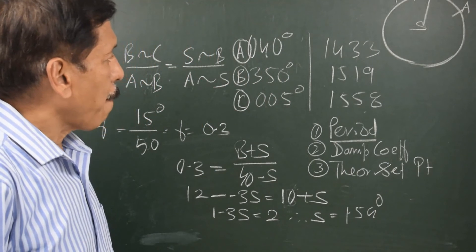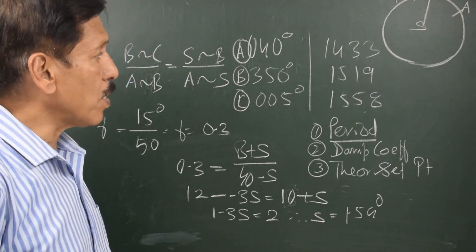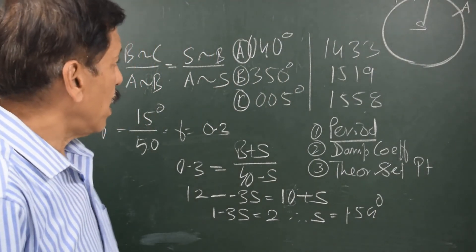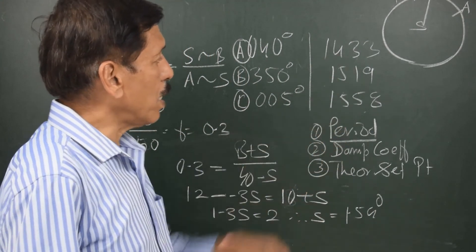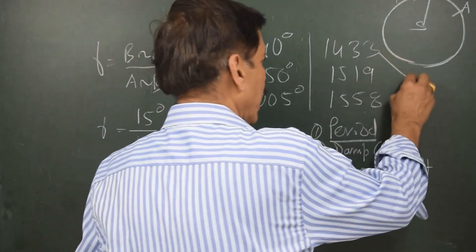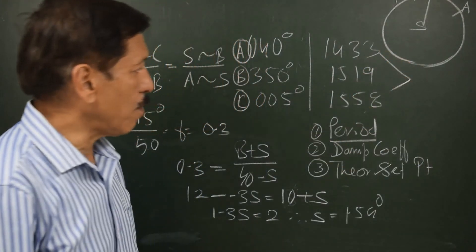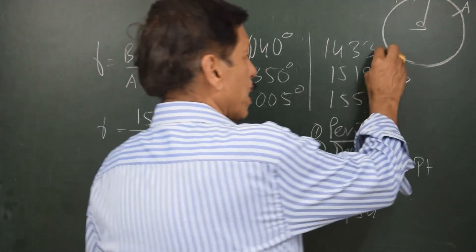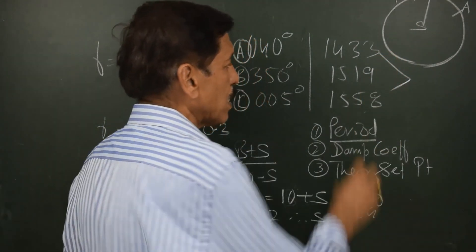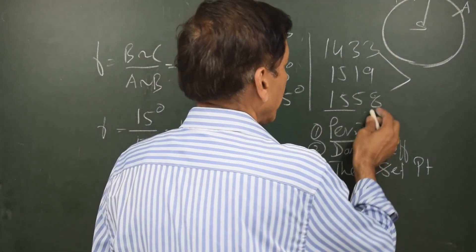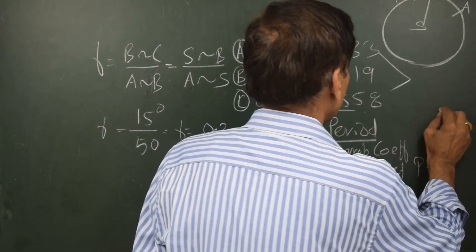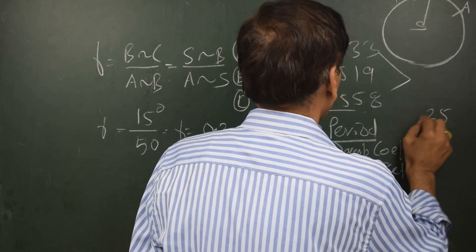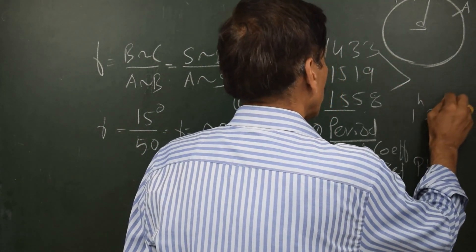Now, if you see that the axle was on maximum easterly position at 1433 and once again it was in the similar phase at 1558, so if we want to know about the cycle of gyro, it will be the time difference between the similar phases that is maximum easterly. And let us see how much you get. 1 hour 25 minutes.